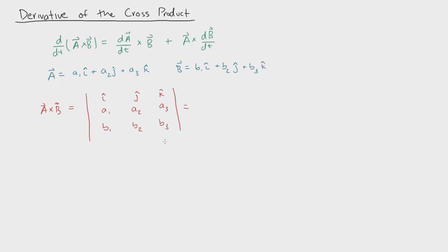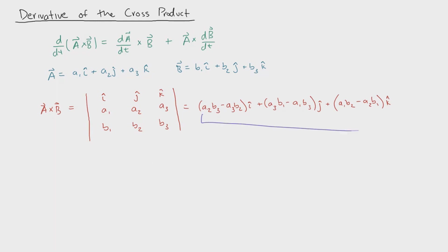If we apply the rules of a cross product — and if you're unfamiliar with the cross product, I made a video about it in my statics playlist — we compute a cross b to get the resulting vector. Now we're going to take the derivative of this cross product with respect to time, though it could be any other variable. I'm going to denote the derivative of some value with respect to time using dot notation, so ȧ means da/dt. We're simply going to take the derivative of each component separately.